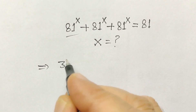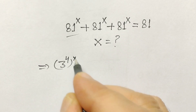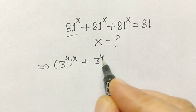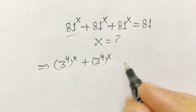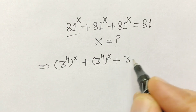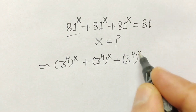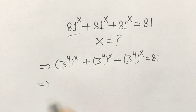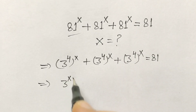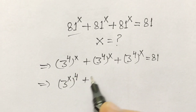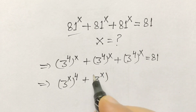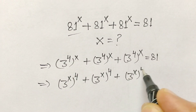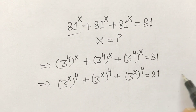We rewrite 81 as 3 to the power 4. So we have 3 to the power 4 to the power x, plus 3 to the power 4 to the power x, plus 3 to the power 4 to the power x, equals 81. This becomes 3 to the power x, all to the power 4, plus 3 to the power x to the power 4, plus 3 to the power x to the power 4, equals 81.